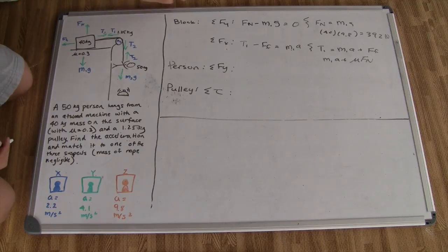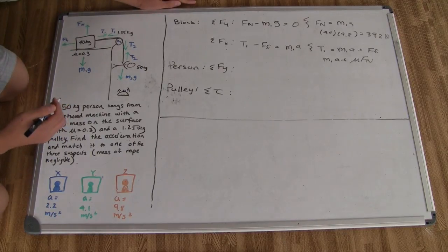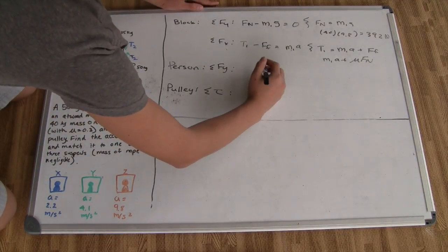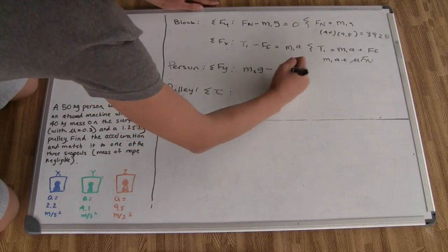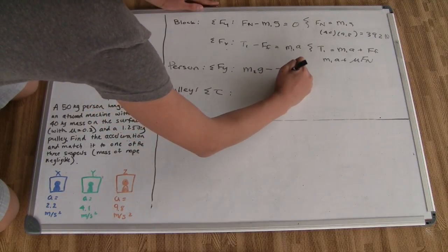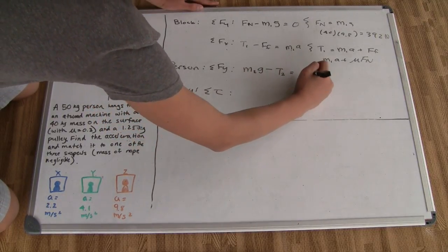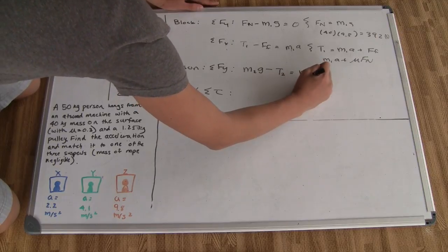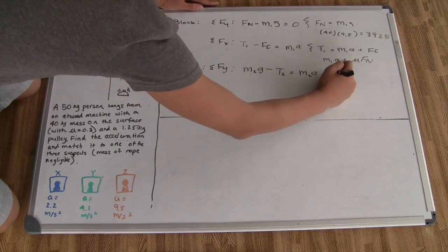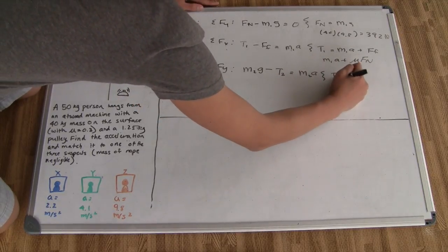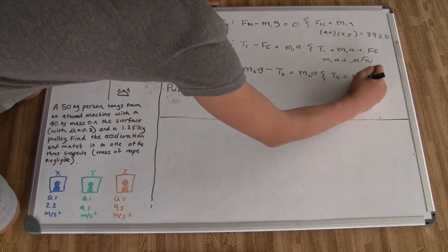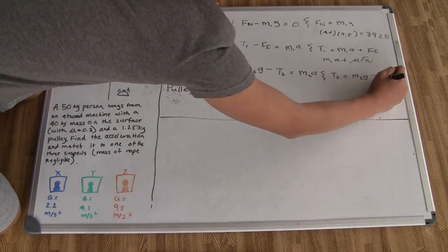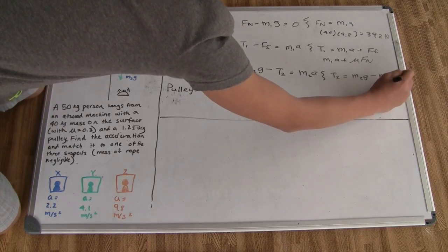Next, we consider the summation of forces in the y-direction for the person. The weight of the person (mass times gravity) minus the tension in the rope equals the mass times acceleration of the person. Therefore, the tension in the rope equals the weight of the person minus mass times acceleration: T₂ = m₂g − m₂a.